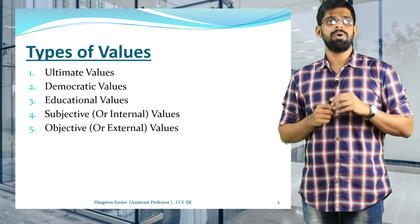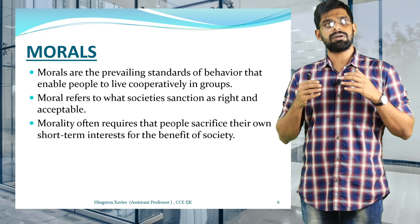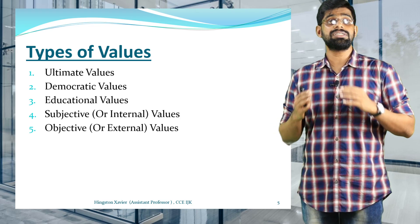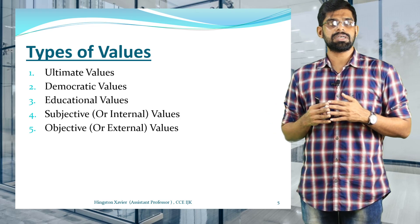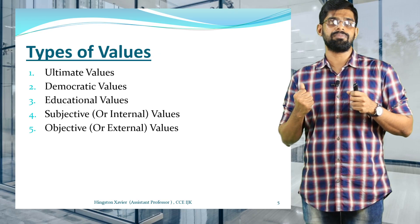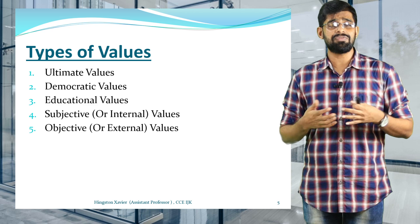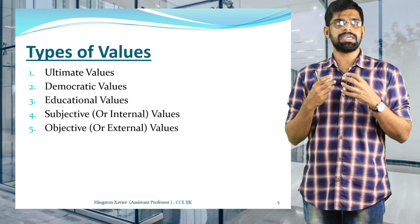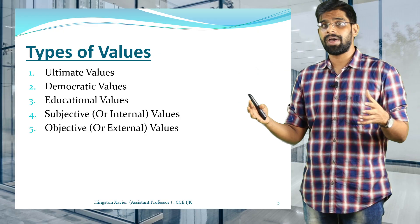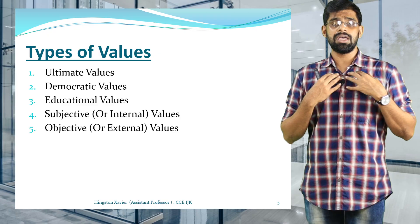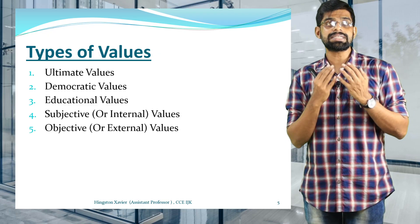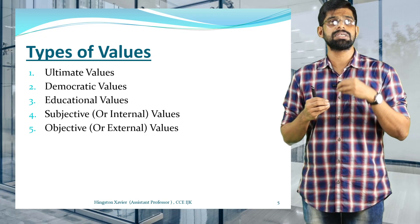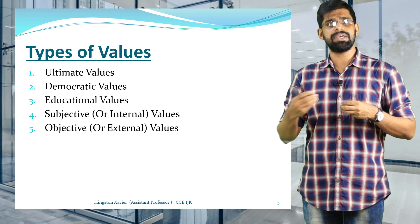Now let's look at the different types of values. The first type is ultimate values. Ultimate values are those values you acquire from your surroundings — your family, education institution, peer group, and so on. They belong to you as an individual, and they are incorporated into a person by family members, parents, siblings, relatives, cousins, and friends.